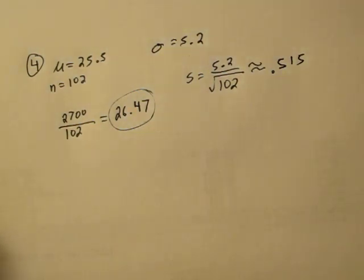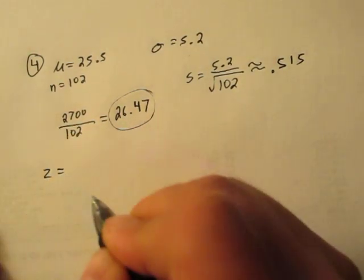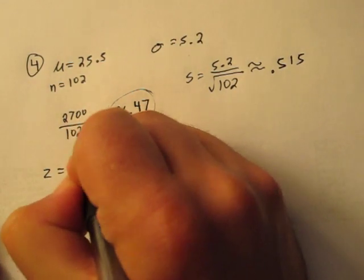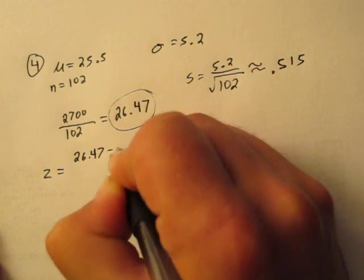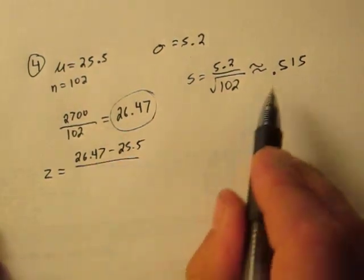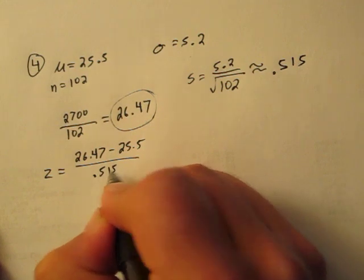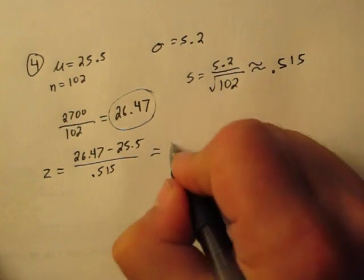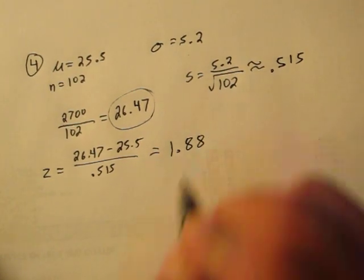Using our z-score, or our z-formula, we can calculate a z-score. The value of interest minus the mean divided by the standard deviation. We get a z-score of 1.88.